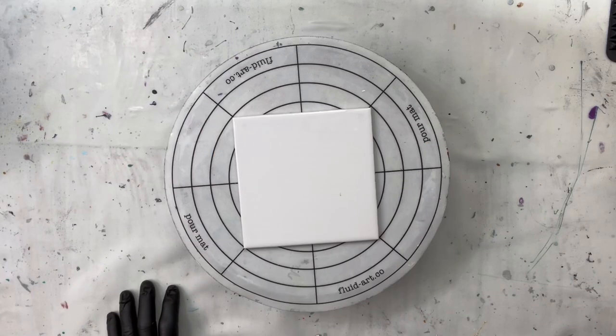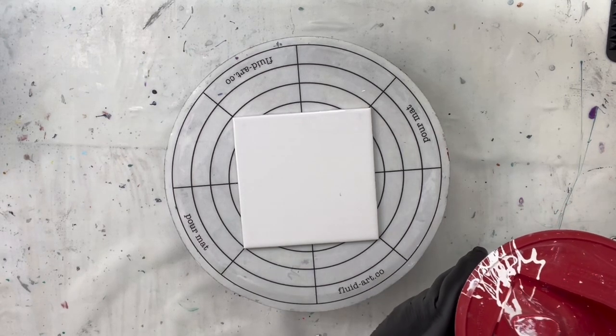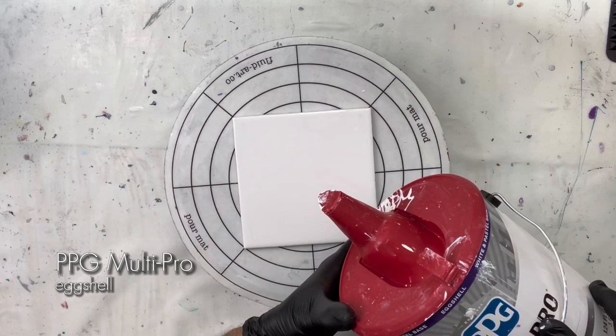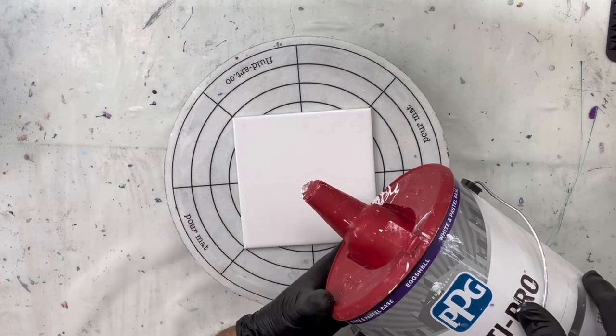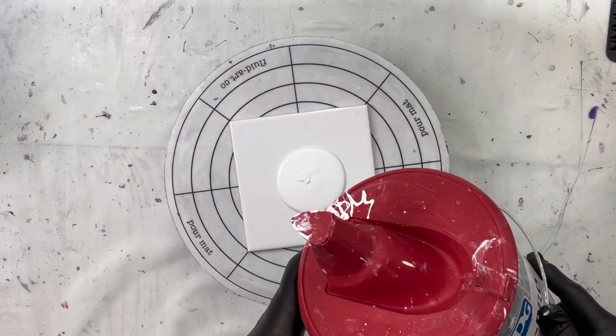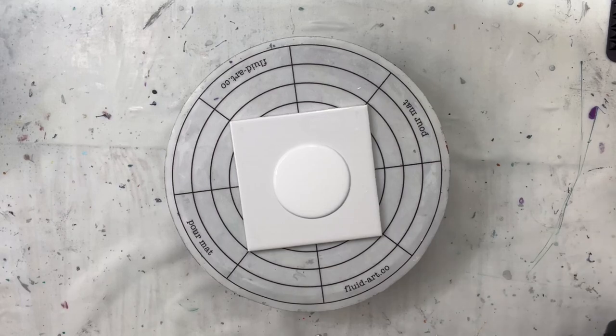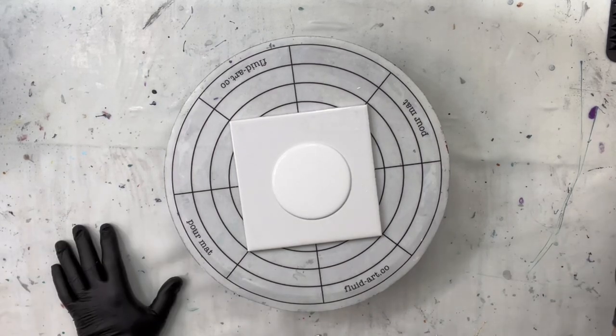First thing I'm going to put down is my standard pillow paint. This is PPG MultiPro in eggshell. It's my white pillow. Nice little puddle down in the middle. This is a six-inch tile, a good demo and a good way to practice this.